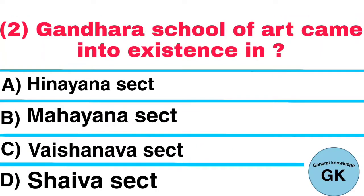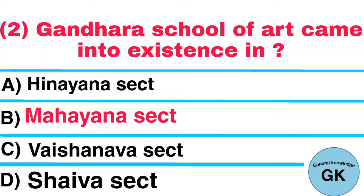Question number 2. Gandhara School of Art came into existence in: A. Hinayana sect, B. Mahayana sect, C. Vashanava sect, D. Shava sect. Answer: Mahayana sect.